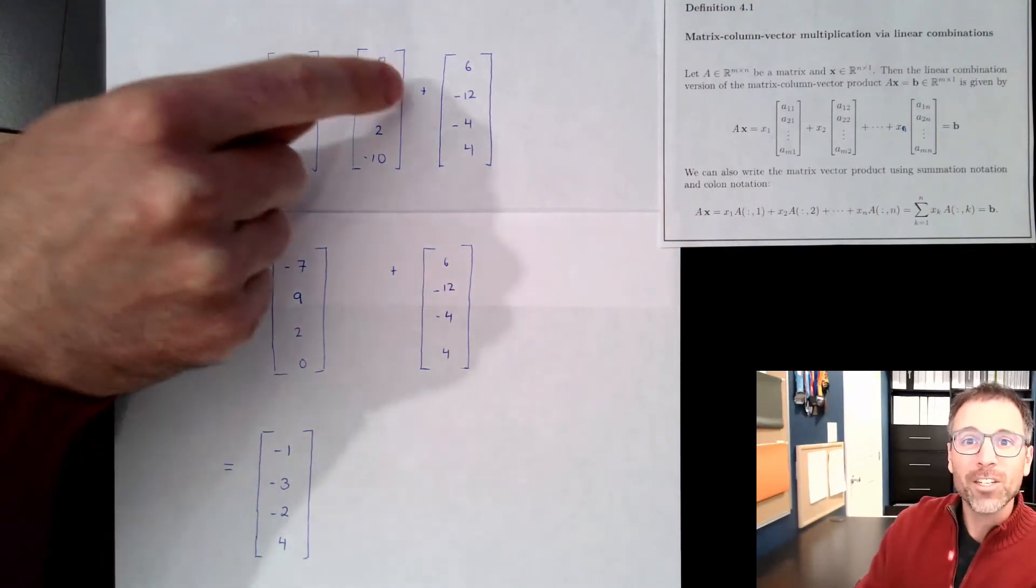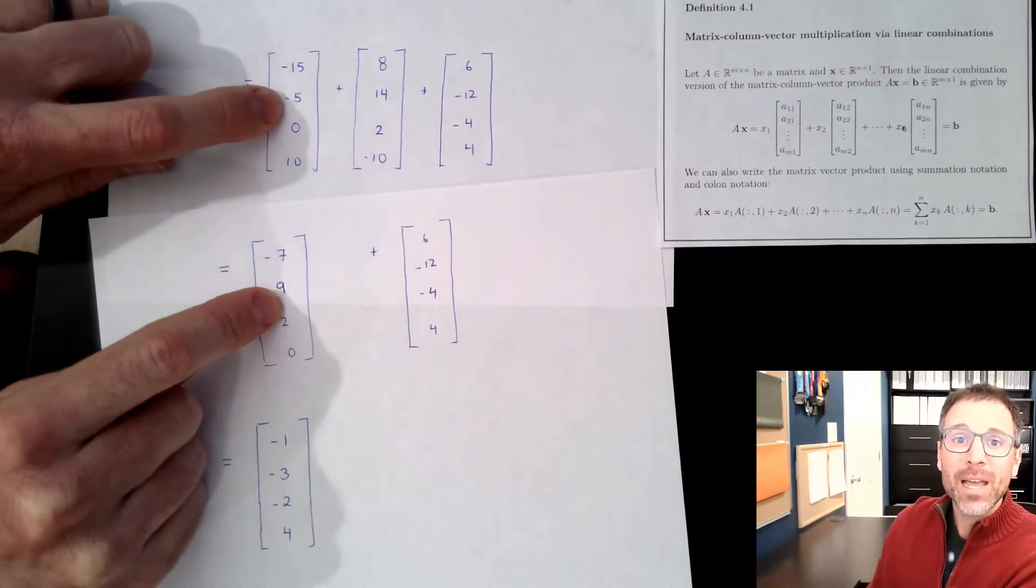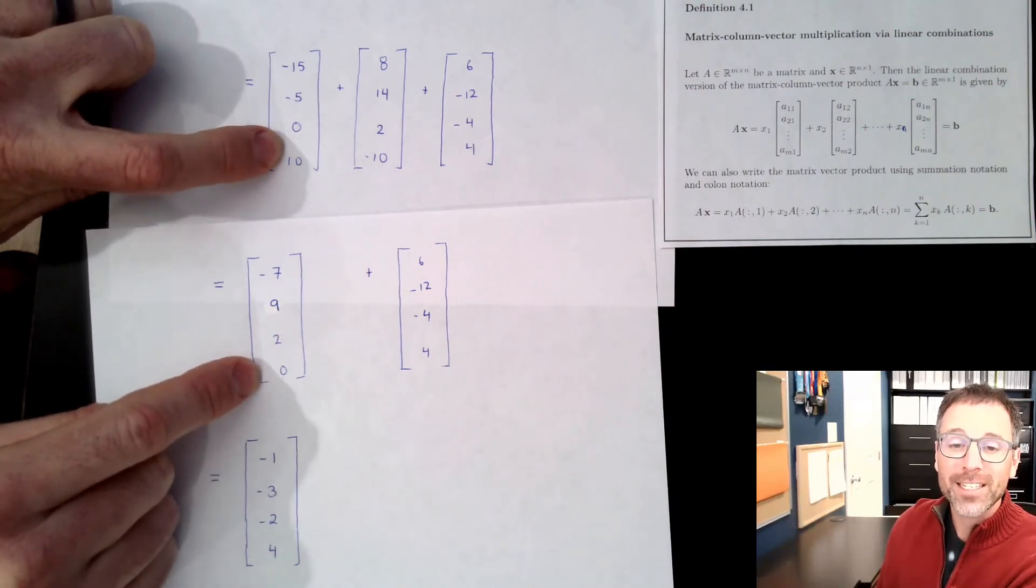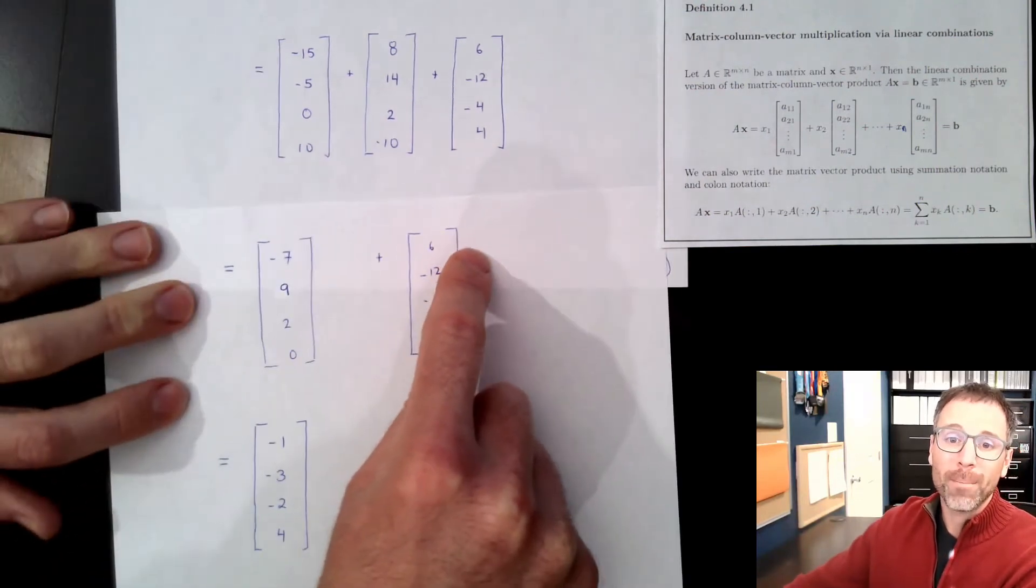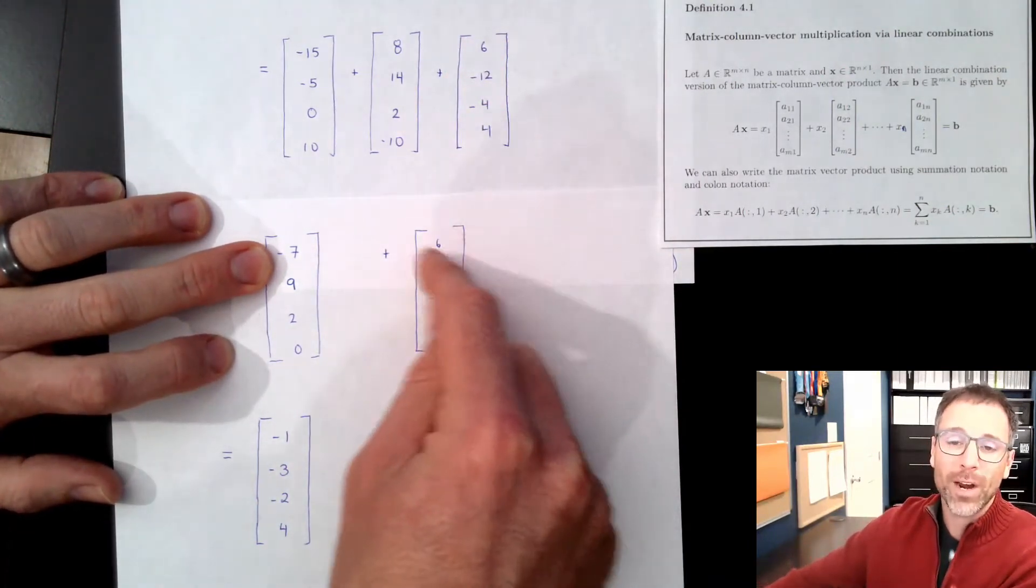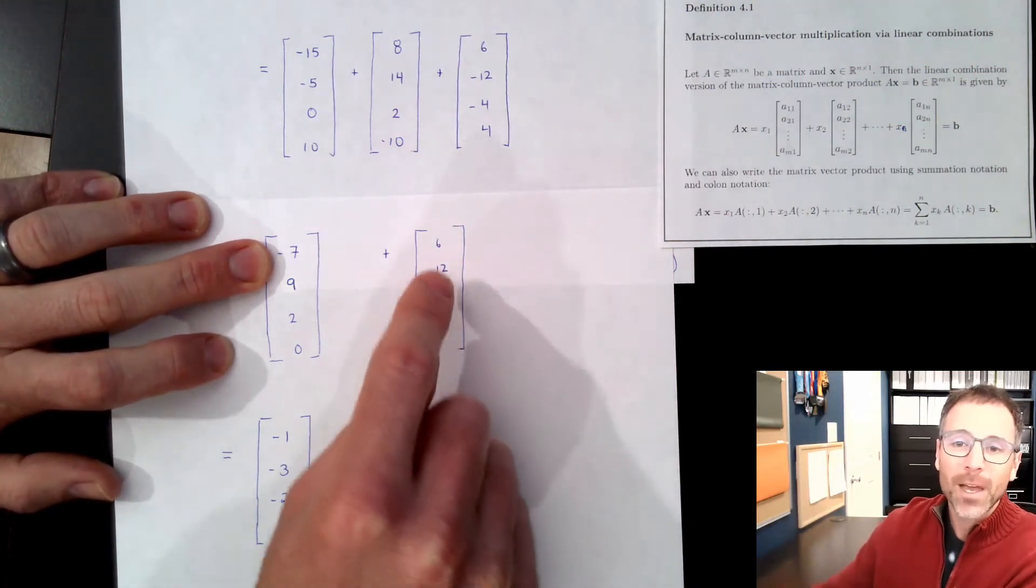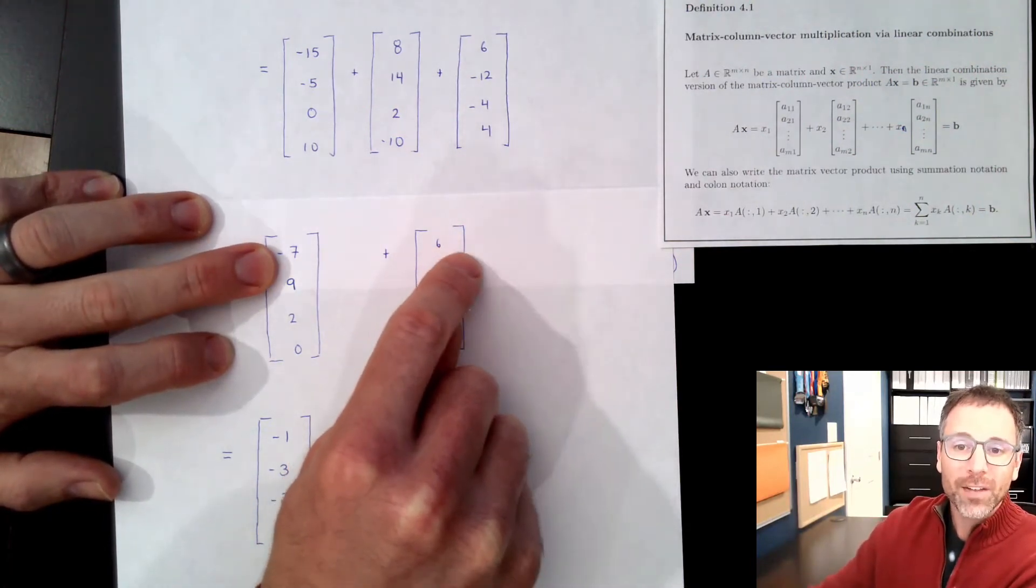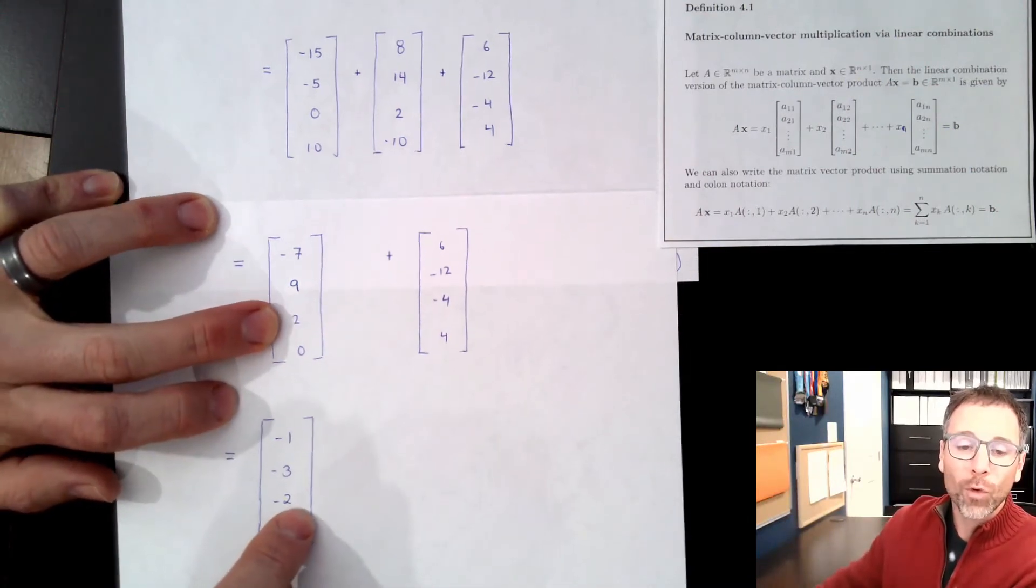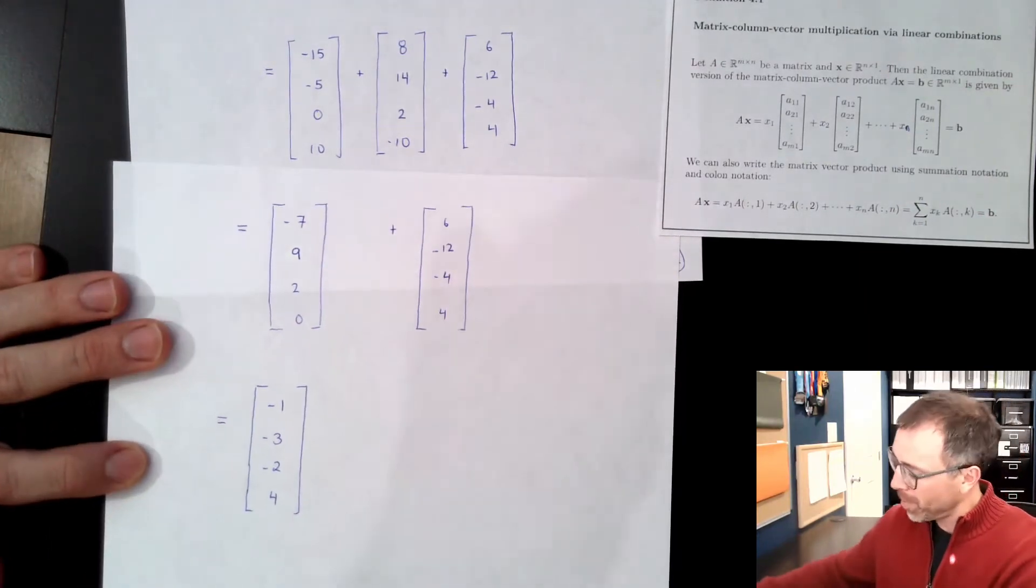But for now, what we're going to do is actually add these two things together. So negative 15 plus 8 is negative 7. Negative 5 plus 14 is 9. 0 plus 2 is 2. 10 minus 10 is 0. And then we're going to combine these together. Of course, I didn't touch this here. And that's the idea that when I'm doing math by hand, I don't want to make a stupid mistake. So I might as well just track it. It takes a few extra seconds. Negative 7 plus 6 is negative 1. 9 minus 12 is negative 3. 2 minus 4 is negative 2. And 0 plus 4 is 4. So my claim is that this is now my vector b.